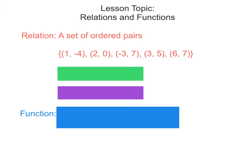A relation is a set of ordered pairs. We've talked a lot about ordered pairs, and ordered pairs are any coordinate X and Y. So this here is a set of ordered pairs. We put these in squiggly brackets on the ends with commas in between each coordinate pair. This right here is a relation — it shows the relationship between an X value and its corresponding Y value.